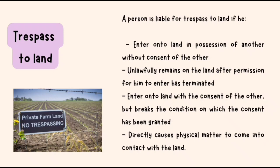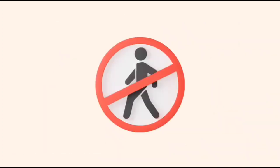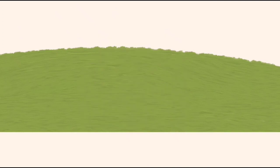Third, enters onto land with the consent of the other but breaks the condition on which the consent has been granted. Fourth, directly causes physical matter to come into contact with the land. But in order to sue, a plaintiff must have possession of land.